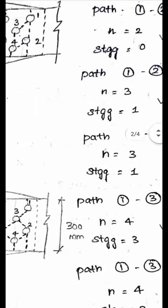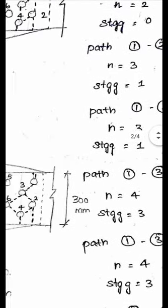Then considering path 1-3-2-4: the number of holes is 4, so n = 4. The inclined lines are between 1-3, 3-2, and 2-4, giving staggered = 3. There are two rules for considering failure paths: the path will not return back at any point, and the path will not move in the horizontal line because we are applying tensile force — a horizontal failure would be purely shear, which will not happen.